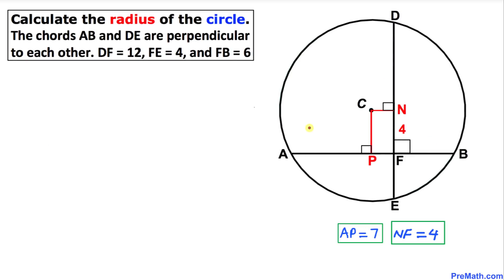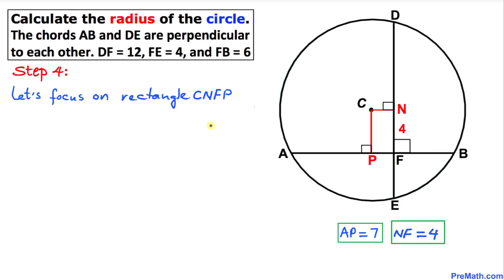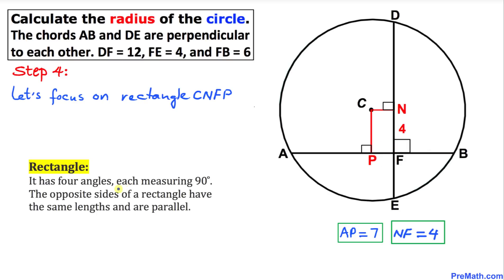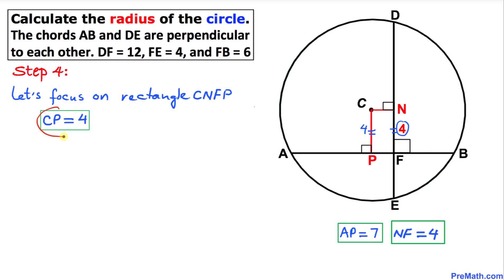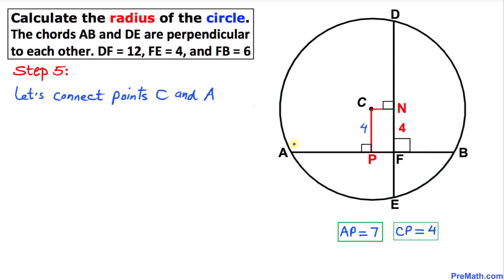Combining the two previous figures, let's focus on rectangle CNFP. By the definition of a rectangle, opposite sides have the same length and are parallel. Since NF is 4 units, the opposite side CP must also be 4 units. Therefore CP equals 4.